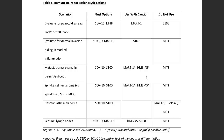HMB45 can be used for sentinel nodes, but I don't use it much because it doesn't have as much sensitivity as Mart1 and has a more granular, less crisp staining pattern. S100 can be used in sentinel nodes but I don't like it — it only tends to work well if there's a big nodule of melanoma, and if there's a big nodule I probably don't need the stain to prove it. S100 has a very dirty background in lymph nodes because Langerhans cells and dendritic cells will all stain, so you've got to be careful interpreting it. I much prefer Sox10 and Mart1, and I do not like MITF in that setting at all.